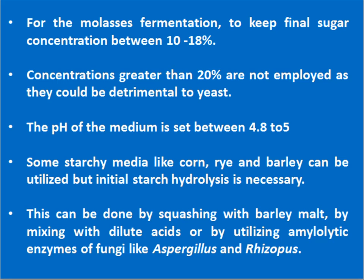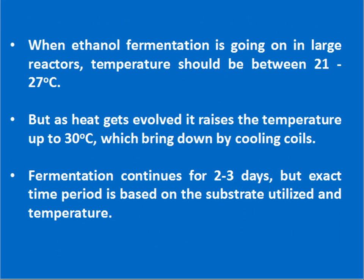Some starchy media like corn, rye, and barley can be utilized, but initial starch hydrolysis is necessary. This can be done by mashing with barley malt, by mixing with dilute acids, or by utilizing amylolytic enzymes of fungi like Aspergillus and Rhizopus. When ethanol fermentation is going on in large reactors, temperature should be kept between 21 to 27 degrees centigrade. As heat gets evolved, it can raise the temperature up to 30 degrees centigrade, which is brought down by cooling coils. Fermentation continues for 2 to 3 days, but the exact time period is based on the substrate utilized and temperature.